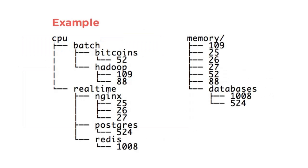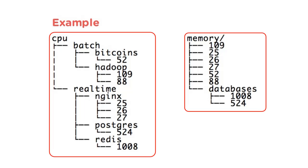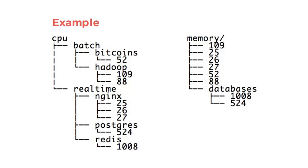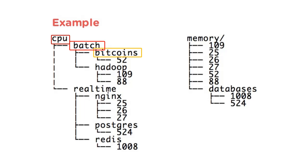The cgroup hierarchies are independent — for example, the trees for memory and CPU are different. Each process belongs to exactly one node in each hierarchy. Each hierarchy starts with a root node. CPU and memory are the root nodes in this example. Each node equals a group of processes sharing the same resources allocated to that node. For example, bitcoins is a subgroup of batch, which in turn is a subgroup of the root cgroup, CPU.